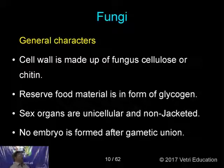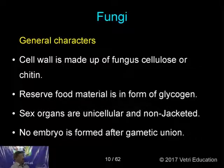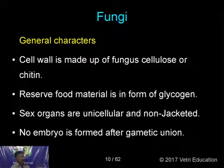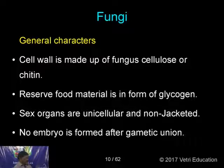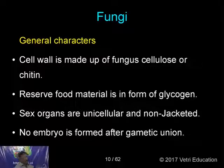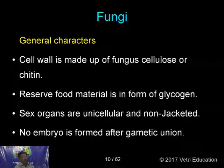The cell wall is made up of fungal cellulose, or it is called chitin. The reserve material is in the form of glycogen. Sex organs are unicellular and non-jacketed — this is common to both algae and fungi. No outer jacketed layer is found around the sex organs. Another similar character to algae: no embryo is formed after gametic union. A zygote is formed, takes some rest, undergoes reduction division, and forms spores, which again develop into the fungus.